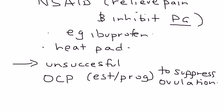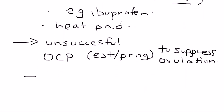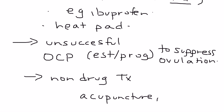If that doesn't work, then you can try other treatments — non-drug treatments. There's a long list: acupuncture, hypnosis, et cetera. Remember, I'm talking specifically about treatment for dysmenorrhea, not speaking of treatment for any other cause of pelvic pain. This is strictly for someone who has been diagnosed absolutely with dysmenorrhea and her pelvic pain is not from some other source or cause.